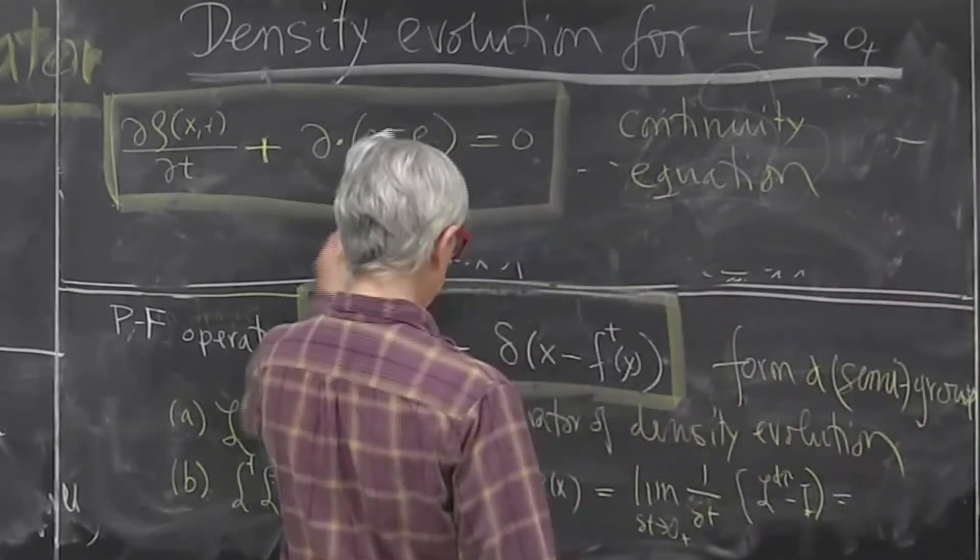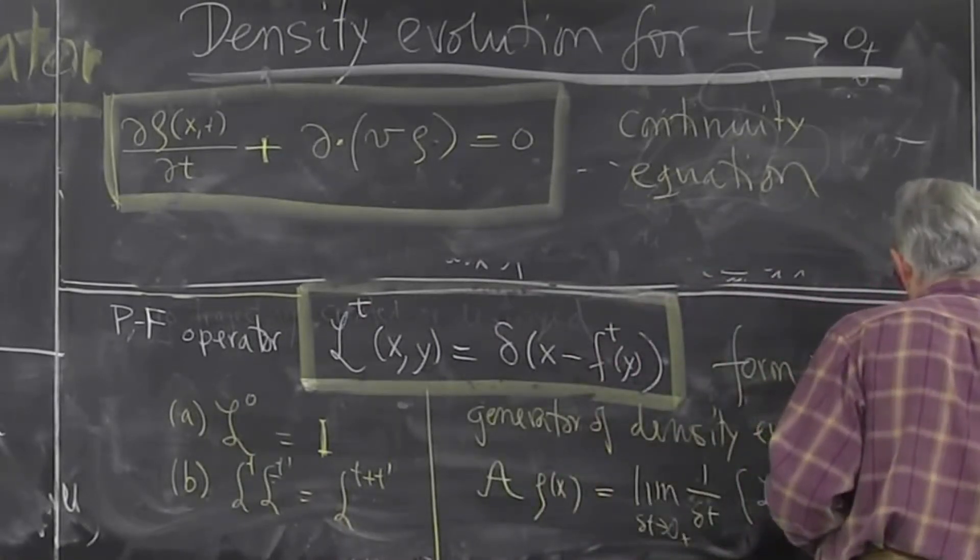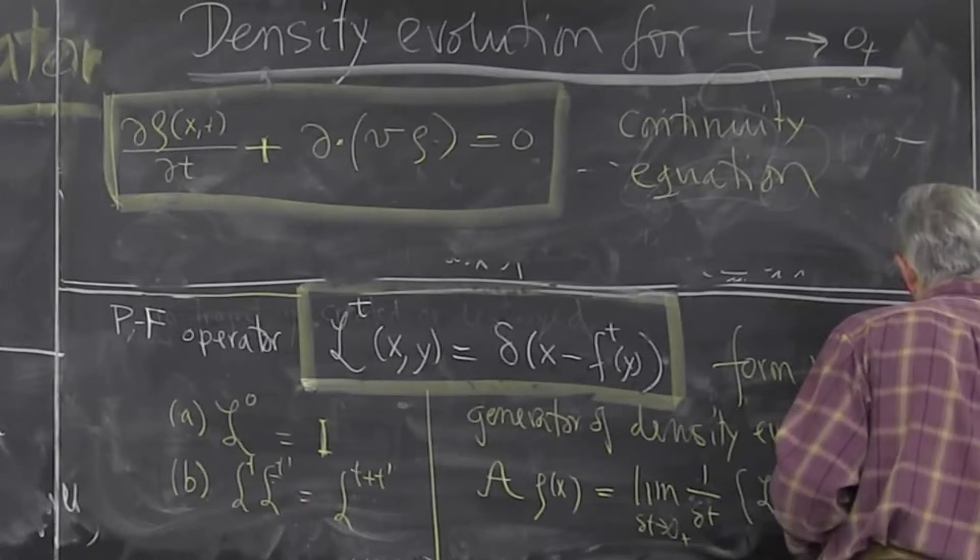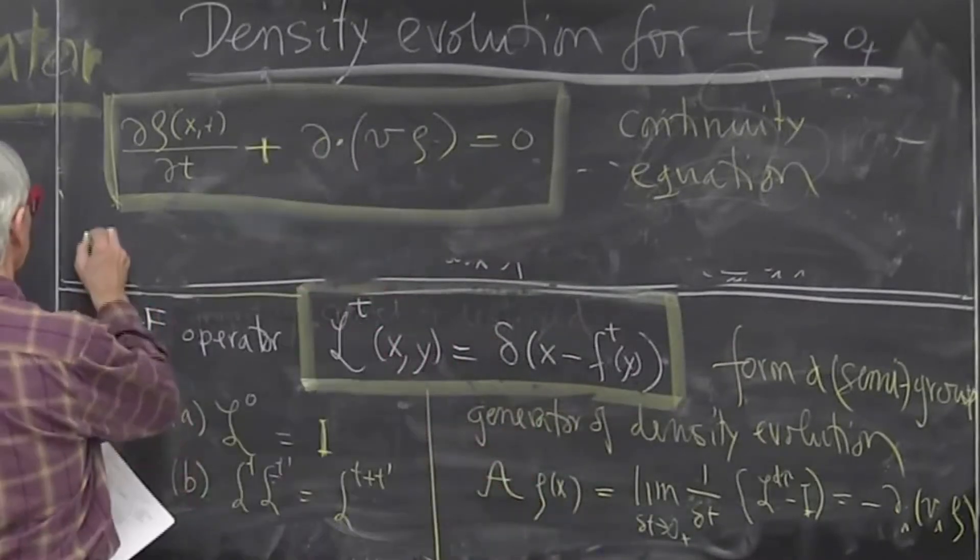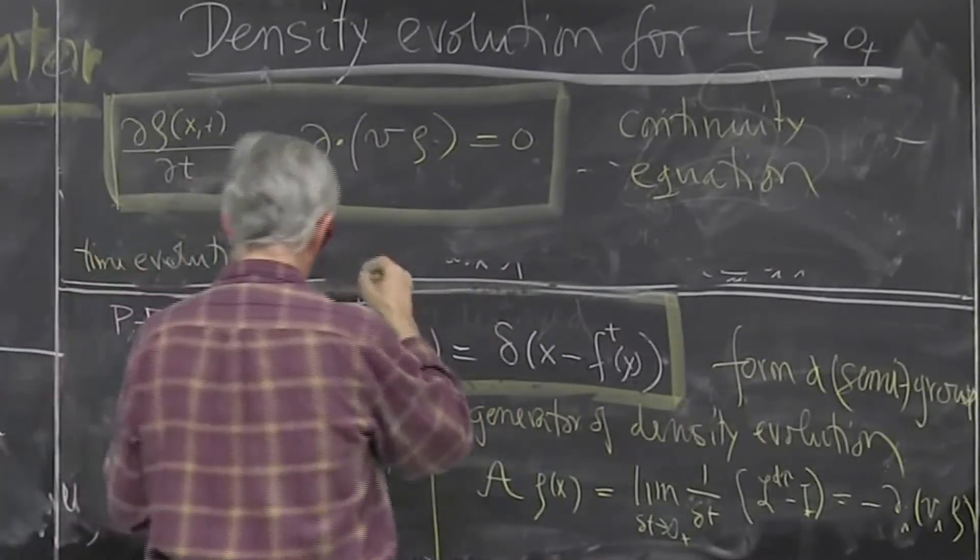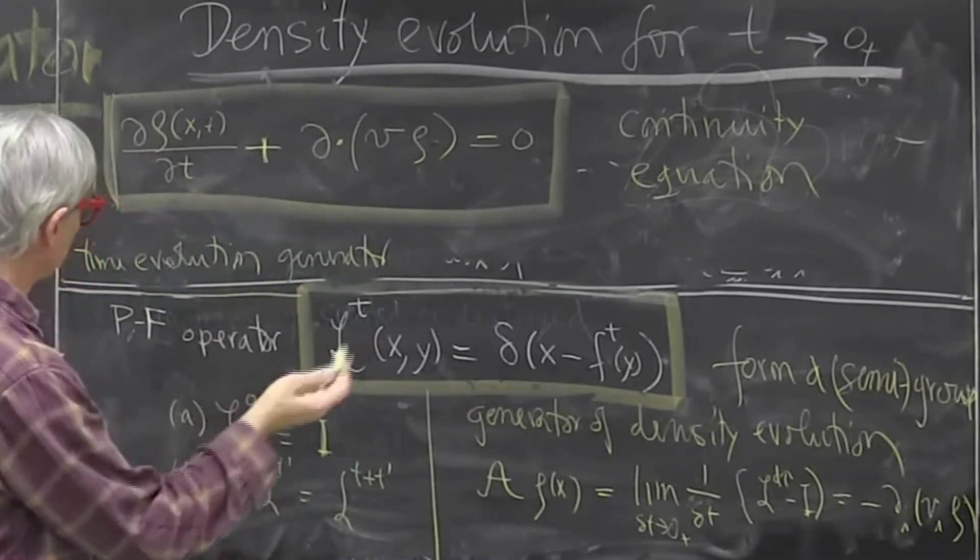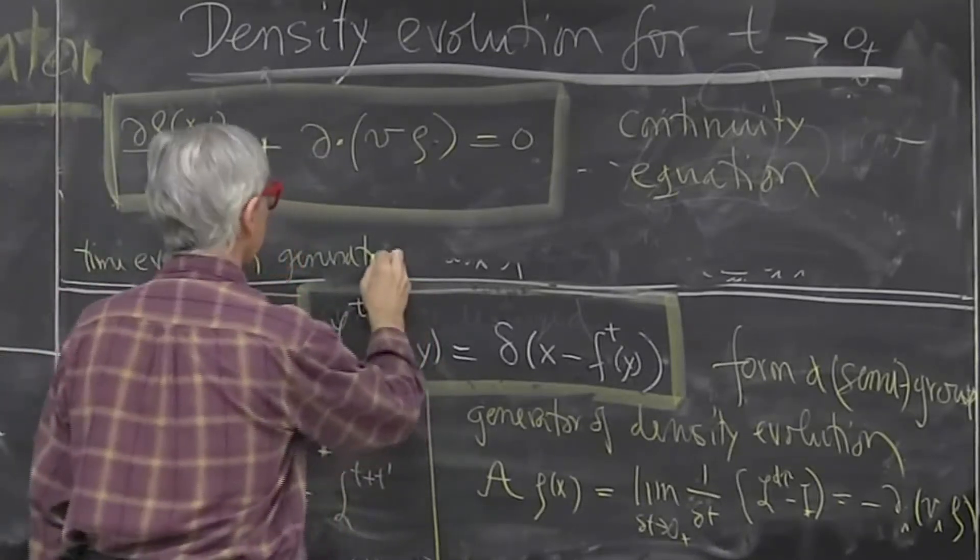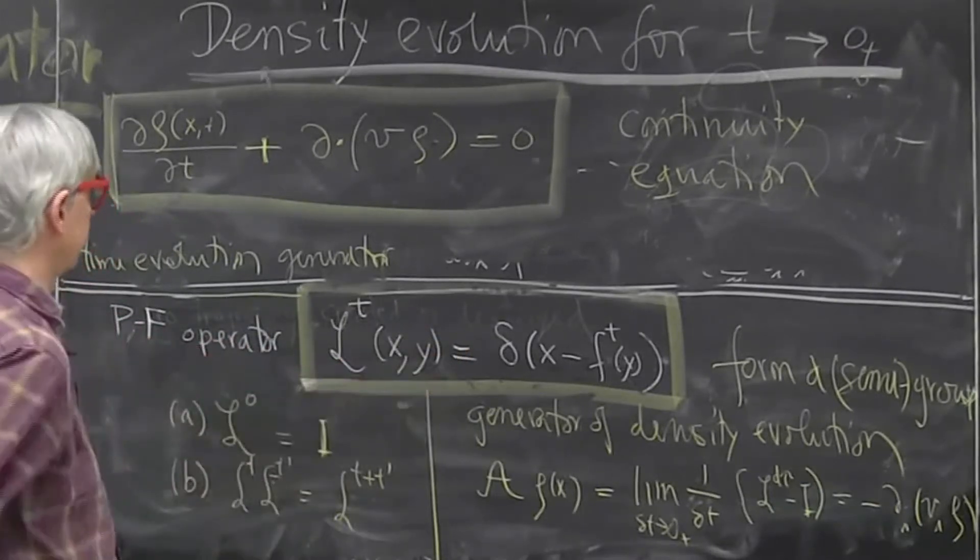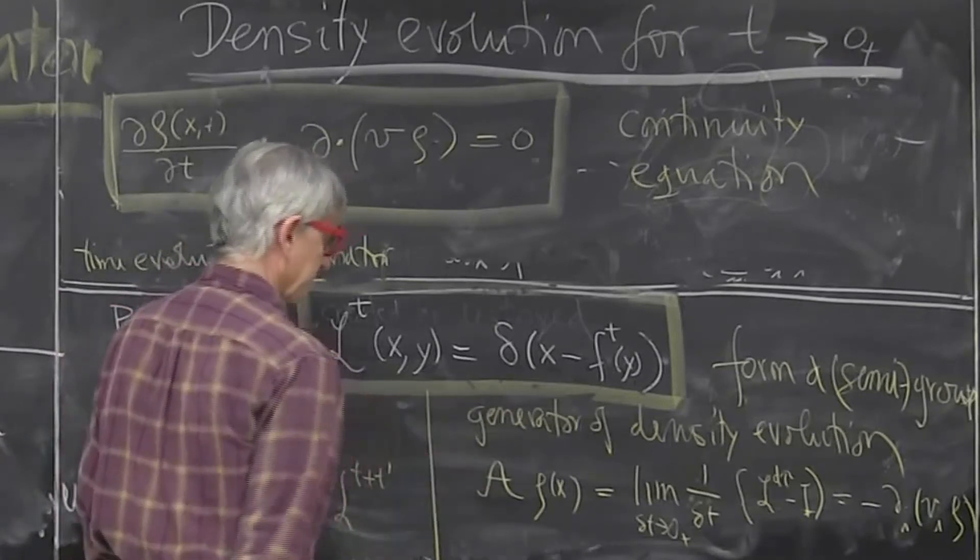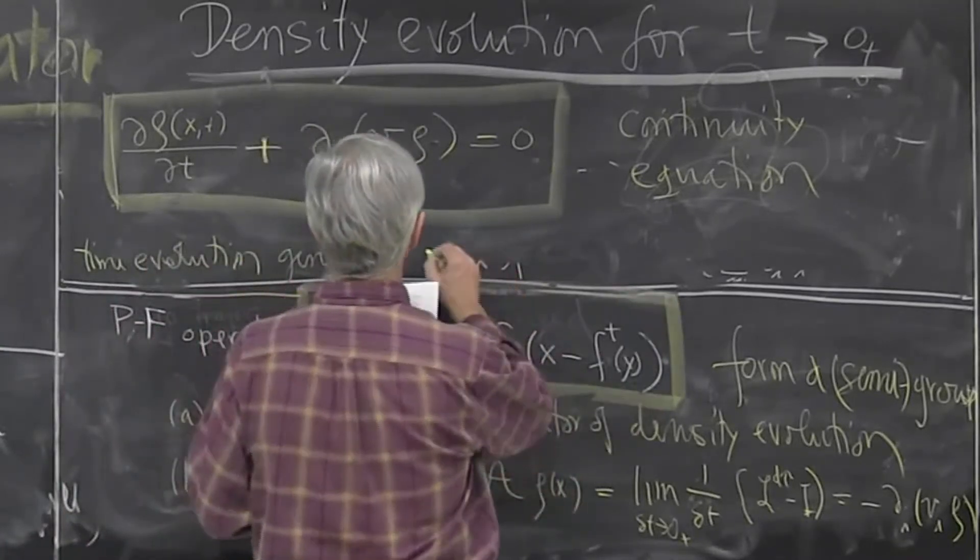But we have just computed this in whatever we raised. It's minus div v acting on the density. So we have time evolution generator. So this is what, you know, it's just like we've already gotten used. In Lie algebra, a group element, we have a generator. In the Jacobian evolution of the neighborhoods, we have the matrix of velocity gradients, which is like this one. And we have to integrate over it to get a total effect.